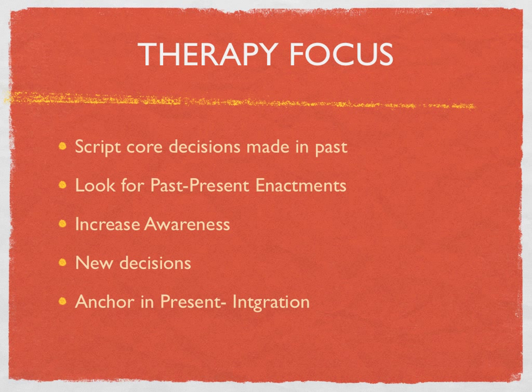Okay, so now let's move to how come you're going to the child ego state. So you're looking for the script core decisions that make up the whole life plan or the mini script for the person. You're looking particularly for how the past, present enactments are created and how they enact their child ego state, their unconscious, in a way that's not useful for them in the present day.